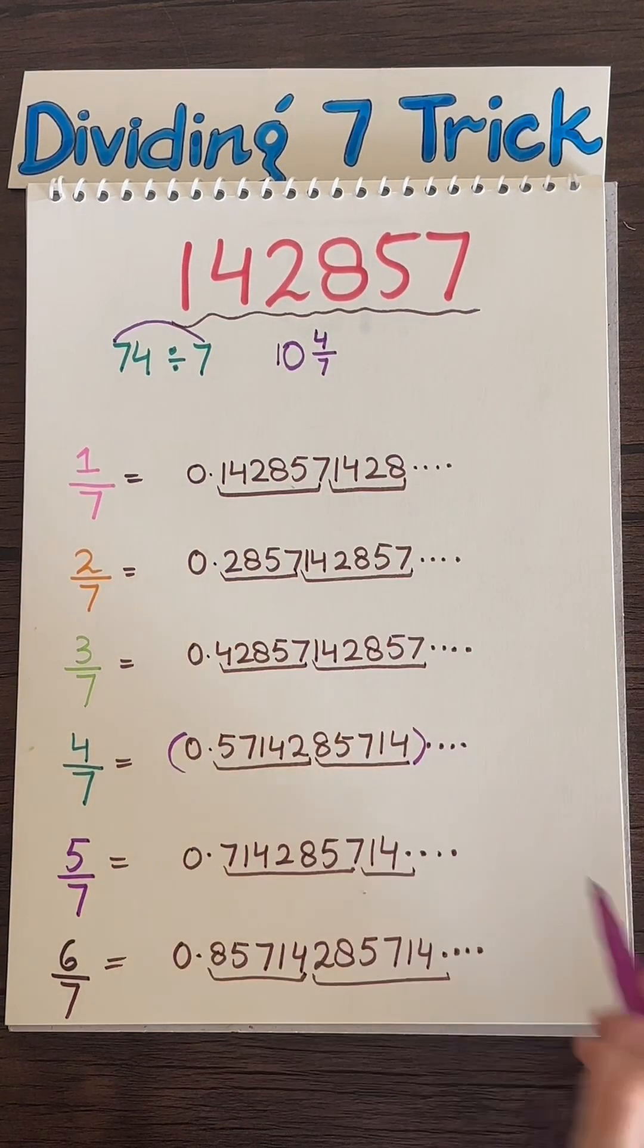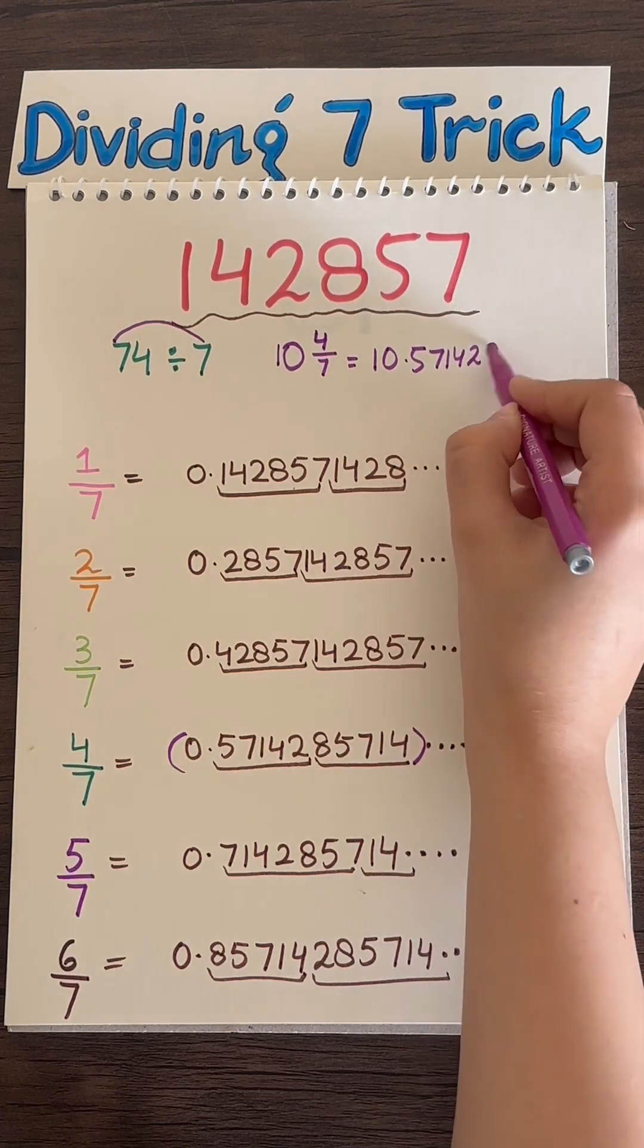And since you now know what 4 over 7 is, simply copy it over into your decimal part.